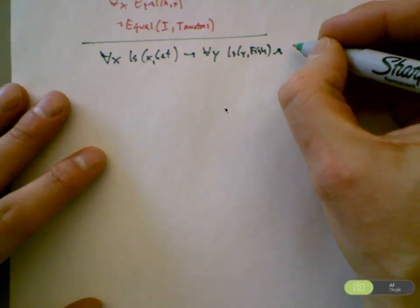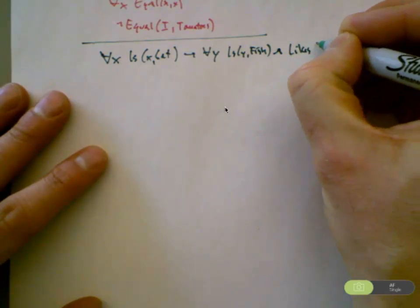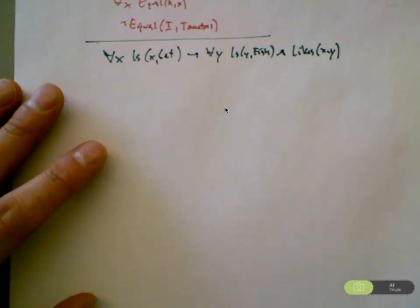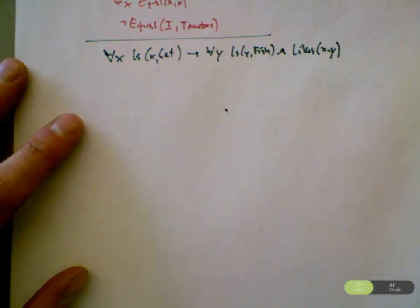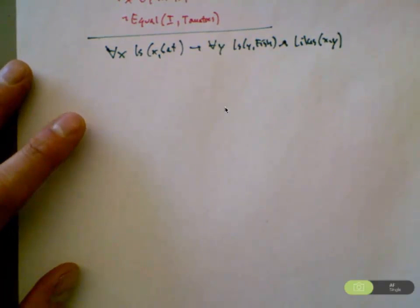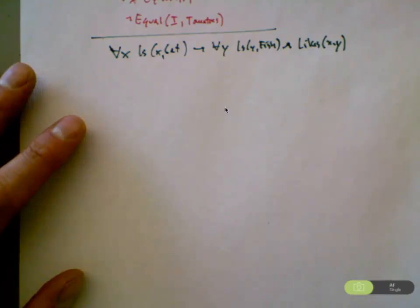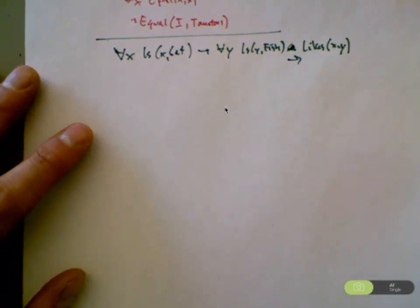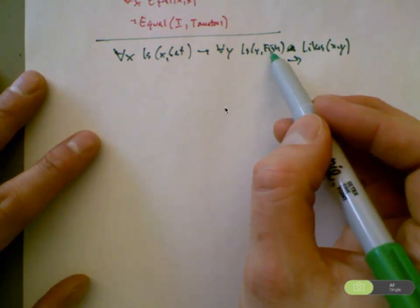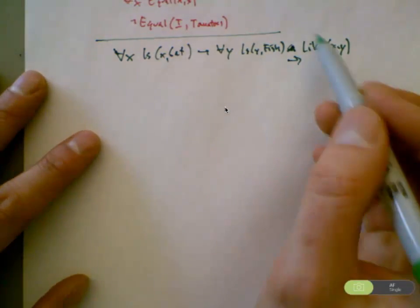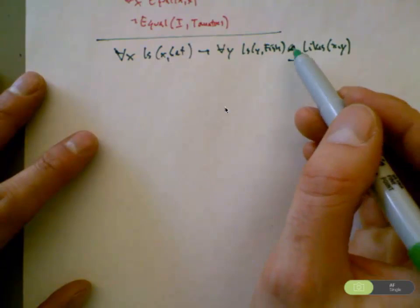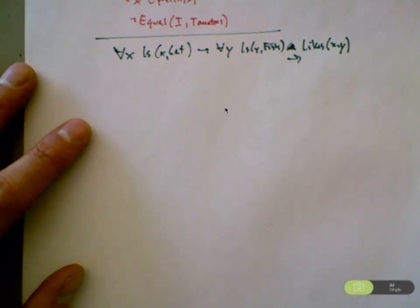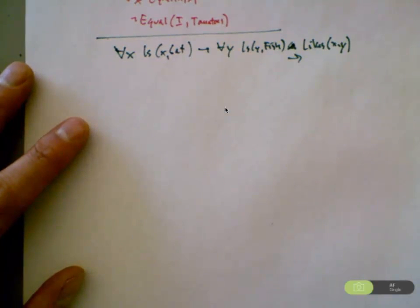And what did you say? Anyone have comments on this? If y is a fish, then this is going to be true. If y is not a fish, then the thing is still true without telling us whether it's liked or not. But if it is a fish, then it's definitely liked.